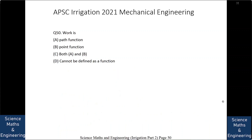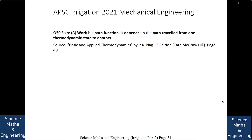Work is: (a) a path function, (b) a point function, (c) both path function and point function, or (d) cannot be defined as a function. The answer is work is a path function because the amount of work depends on the path traveled from one thermodynamic state to another. For example, going from state A to B via a polytropic process or an isothermal process will yield different amounts of work done. With this we conclude Part 2 of the APSC Irrigation 2021 Mechanical Engineering paper.